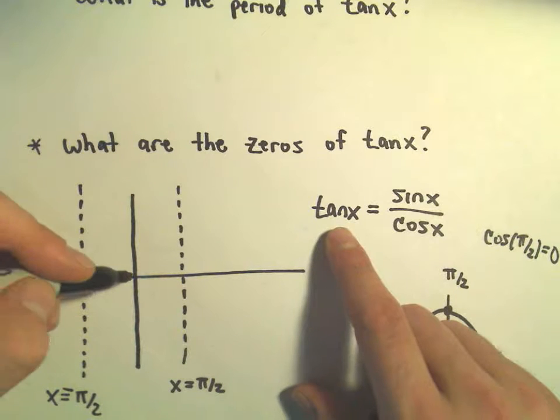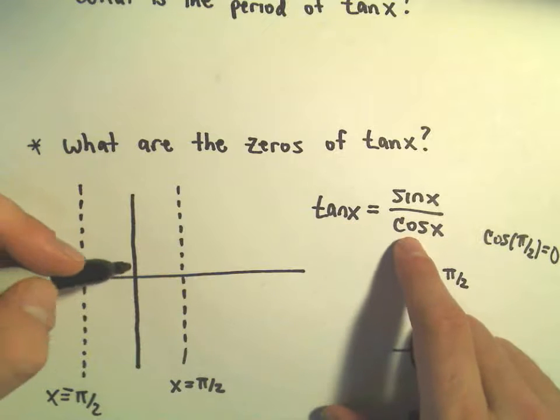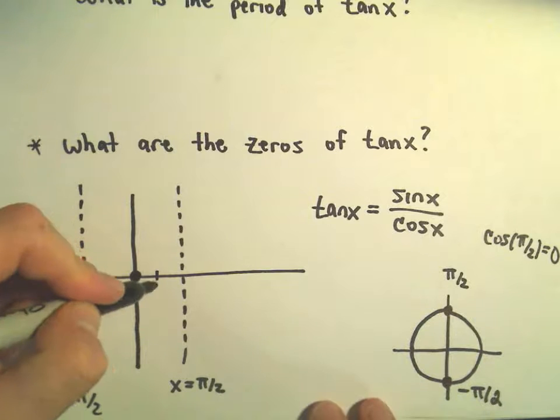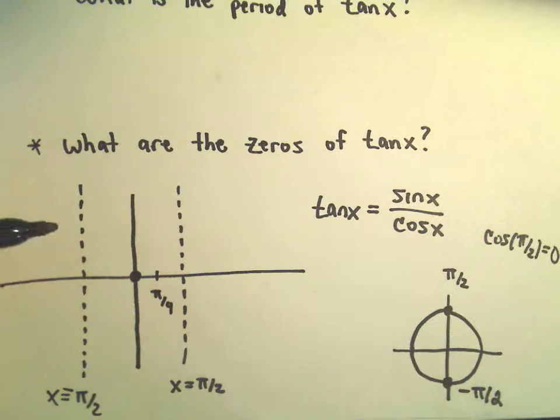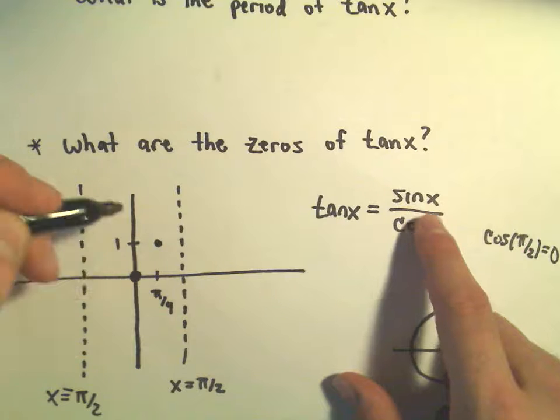You can always plot points. If you plug in 0, tangent of 0 would be sine of 0 over cosine of 0, which is 0 over 1. For example, at π over 4, sine and cosine have the same value, so you'll be at positive 1.